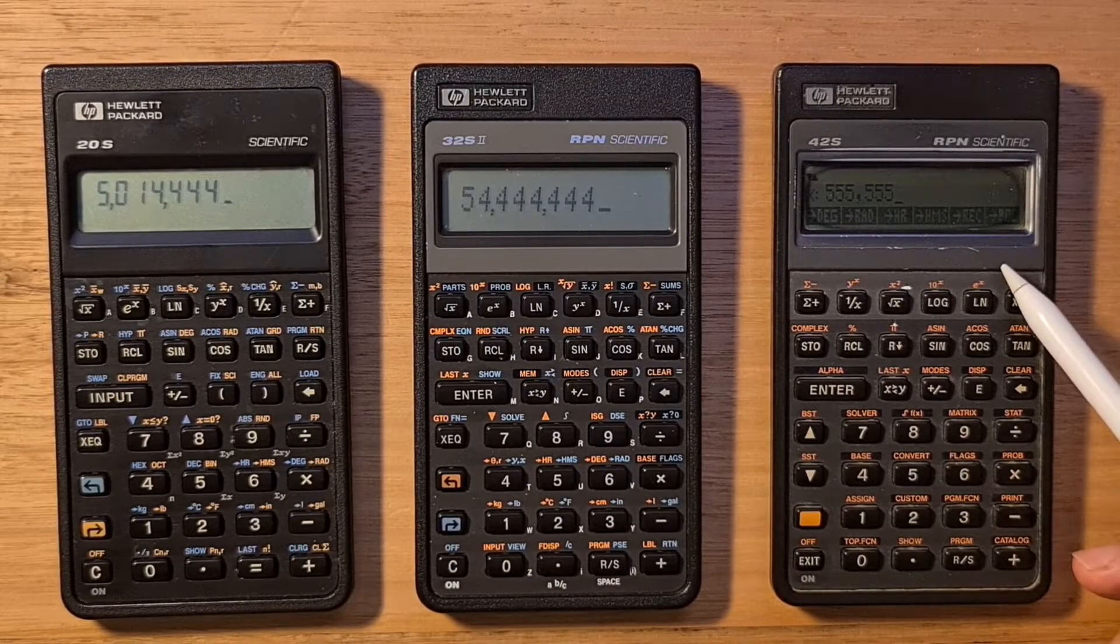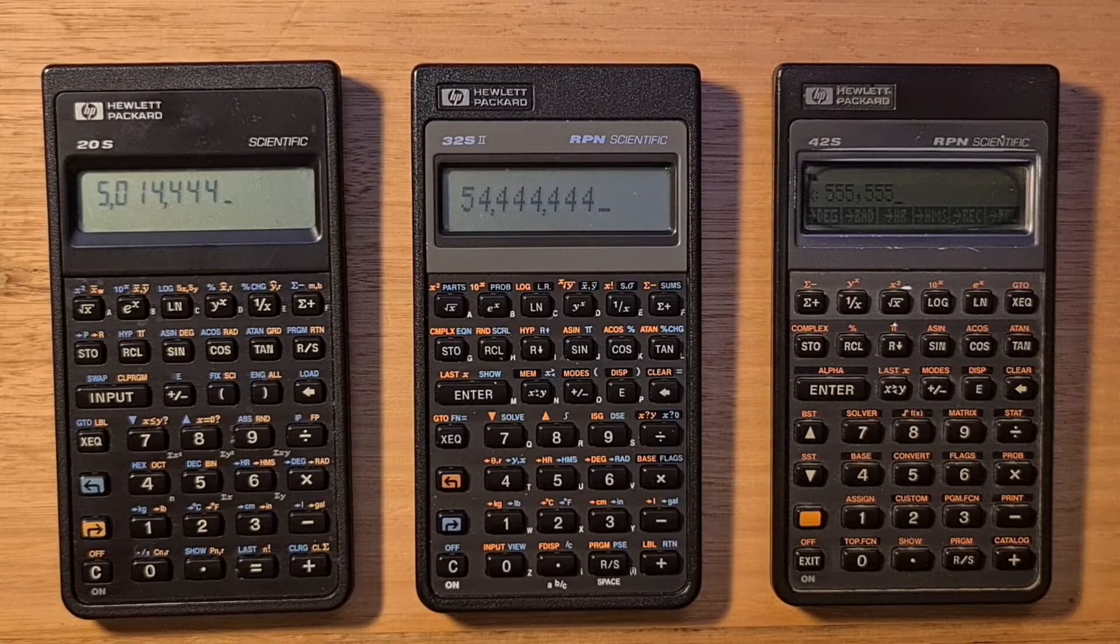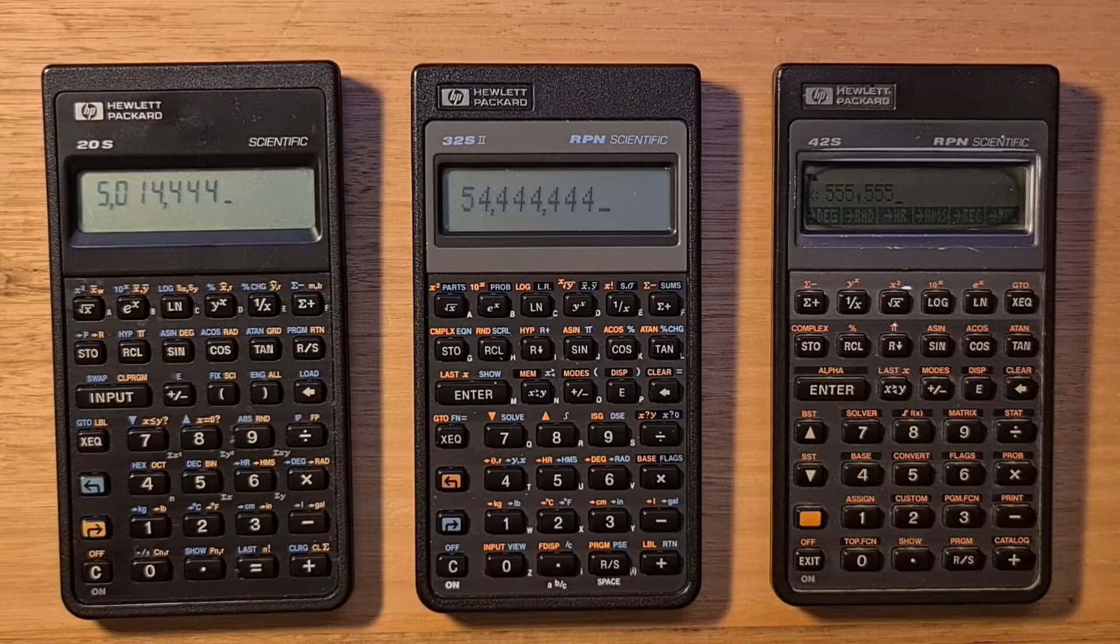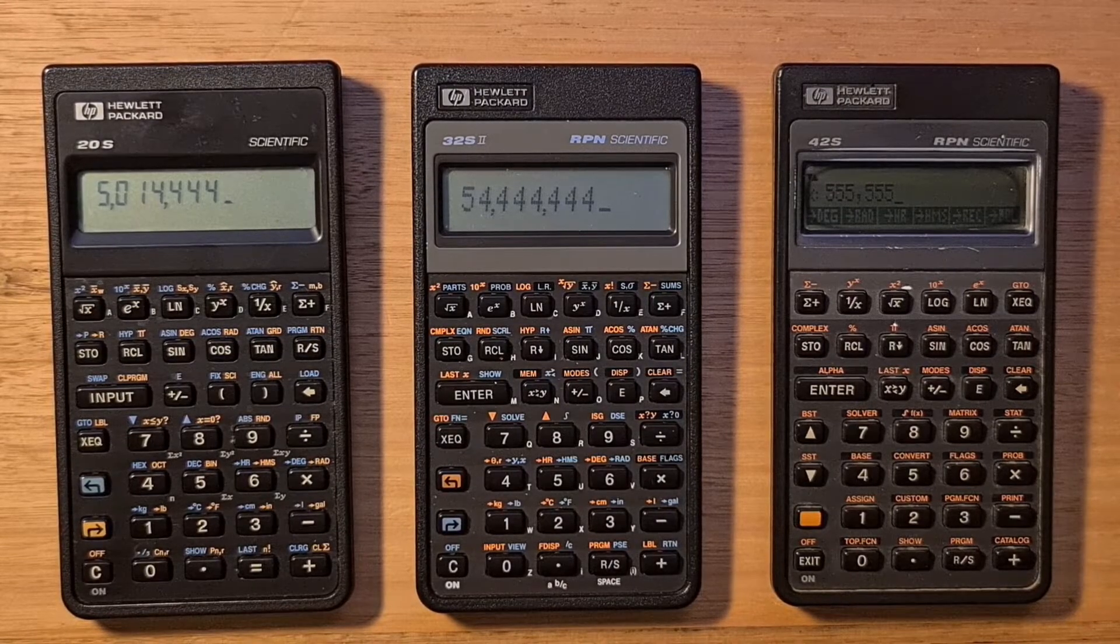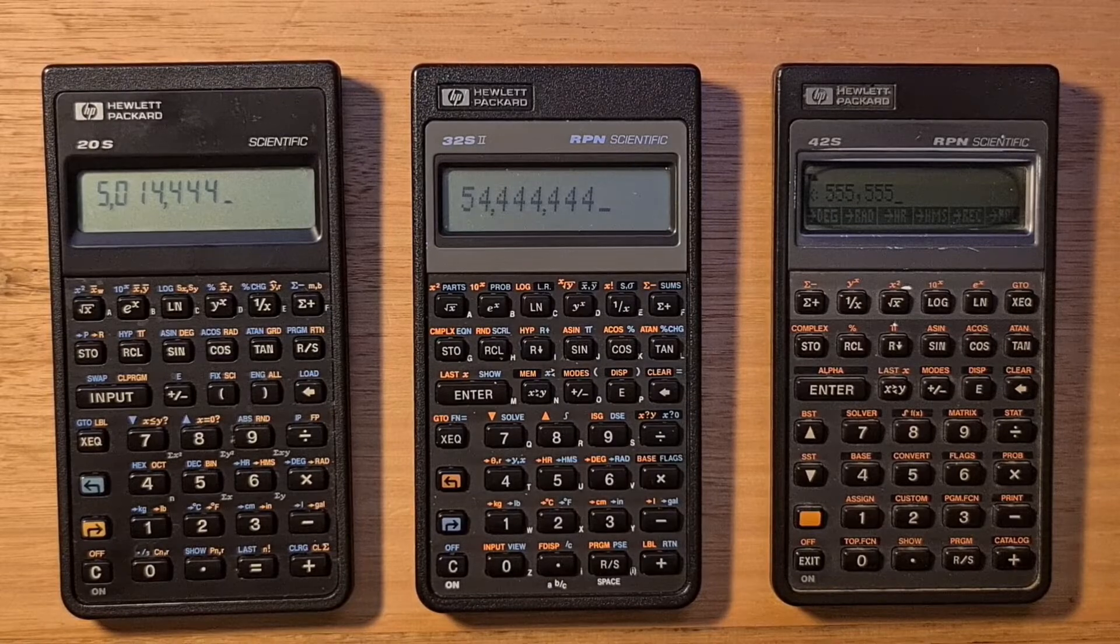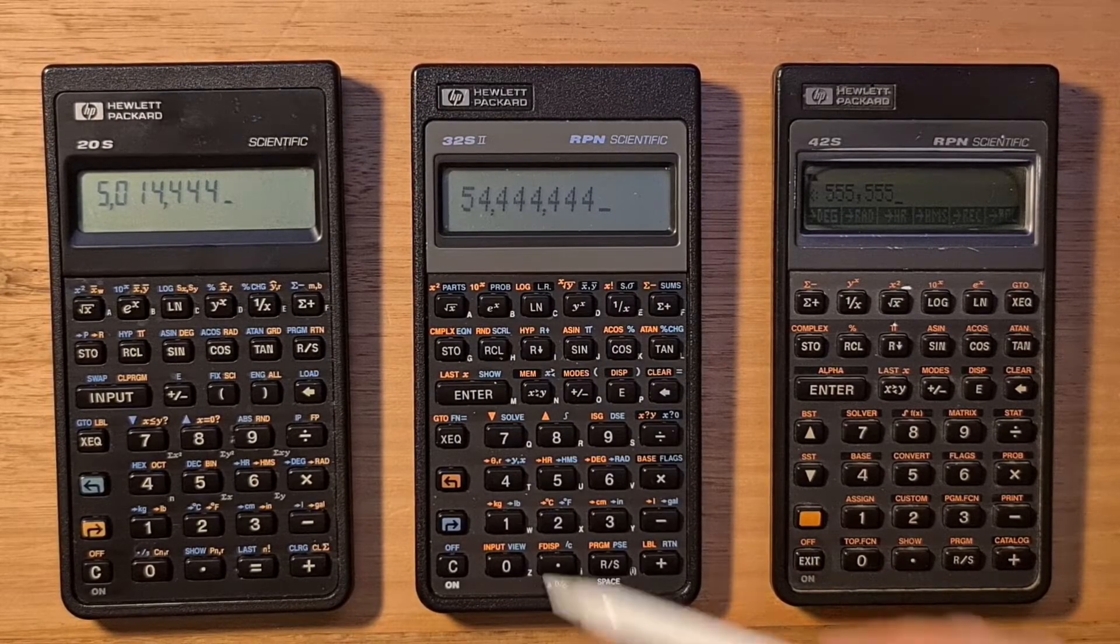Or the 42S, which had the more sophisticated 132 by 16 dot matrix. All the Pioneer calculators had the same keyboard layout with 37 keys, each with different key labels for different models. The 32S2, with its two shift keys,